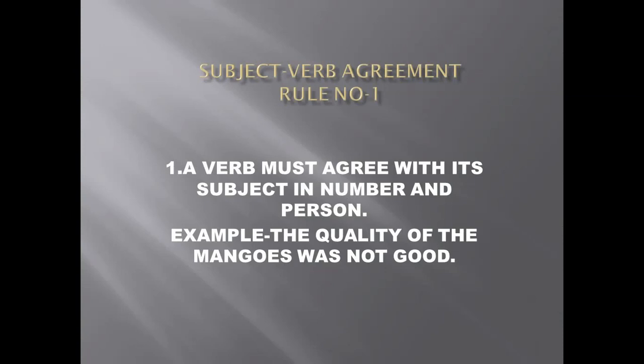The predicate has a verb in it, and according to this topic, the verb in the predicate must agree with the subject. There are many rules which govern subject-verb agreement and I am going to discuss those rules one by one. The first rule says a verb must agree with its subject in number and person. A singular subject will take a singular verb; a plural subject will take a plural one.